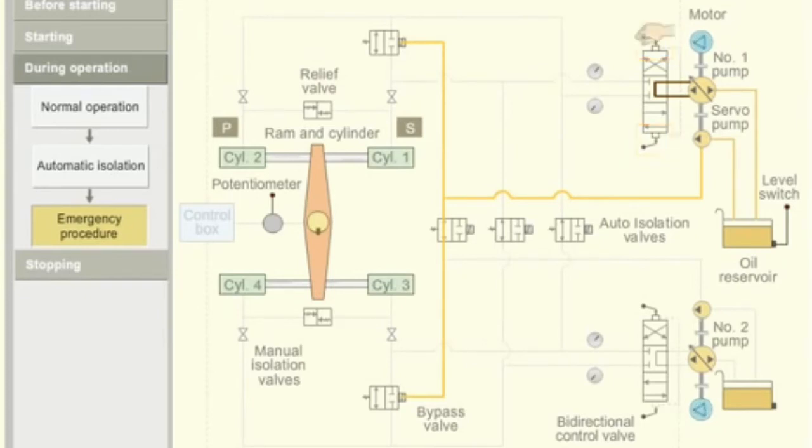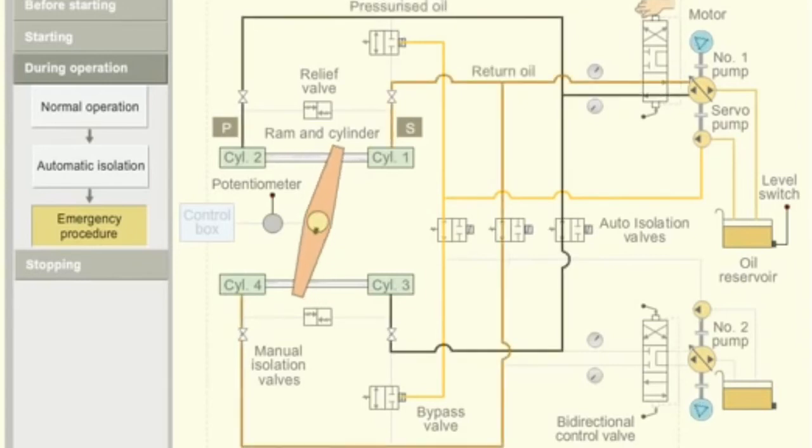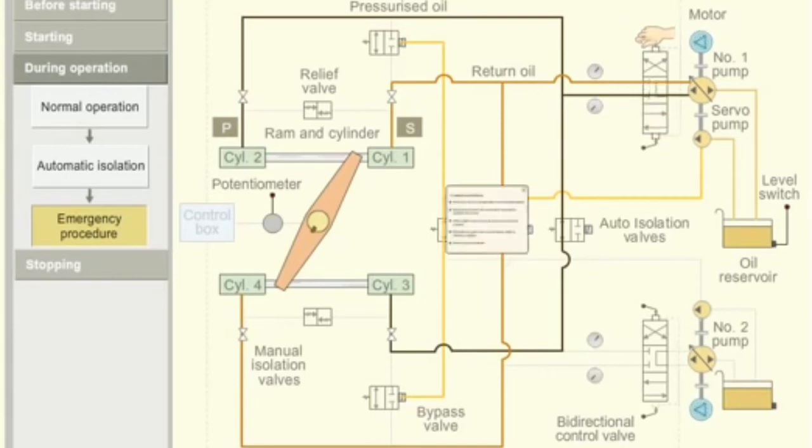When the forward side lever is operated, the bi-directional control valve moves towards forward side. The ram in turn moves the rudder to port side. When the desired rudder movement is achieved, the manual operator releases the lever and the valve comes back to its initial position.